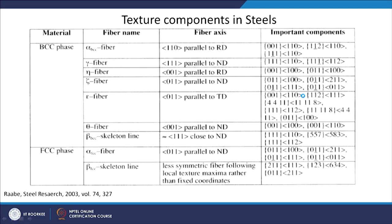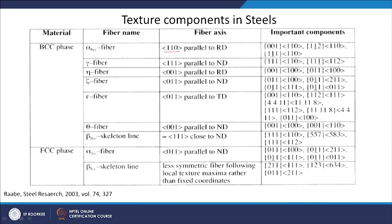In general, if you want to see a complete picture of what different texture components are there in materials — for example in steel, the BCC phase and FCC phase — both are shown here. In the BCC phase there are some fibres written here. A fibre means, for example, the 110 direction is parallel to the rolling direction but we are not specifying the plane. So whenever you have a fibre, any plane whose 110 direction is parallel to the rolling direction qualifies — it can be a 001 plane, a 110 plane, or a 111 plane whose 110 direction is parallel to RD.